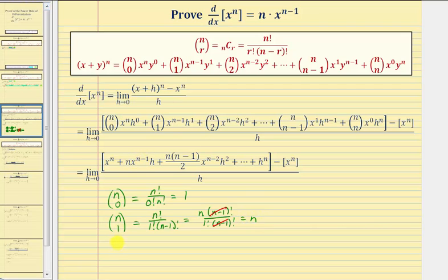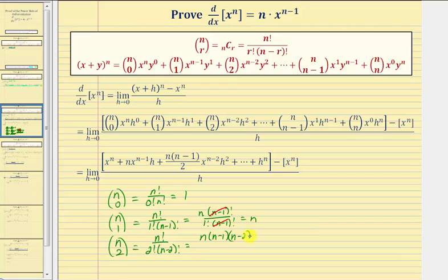Now let's look at one more. n choose two would be equal to n factorial divided by two factorial times n minus two factorial. If we begin expanding n factorial, we'd have n times n minus one, with the remaining terms being n minus two factorial, divided by two factorial times n minus two factorial. Those n minus two factorials simplify to one, leaving us n times n minus one divided by two, which we see in our expansion.